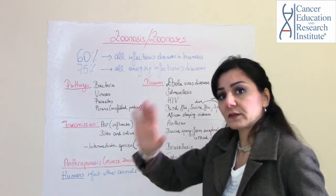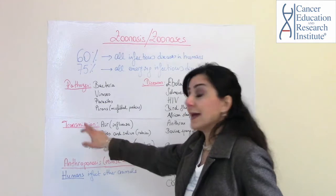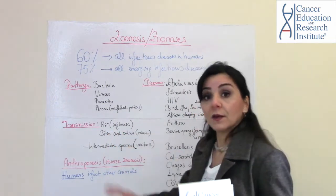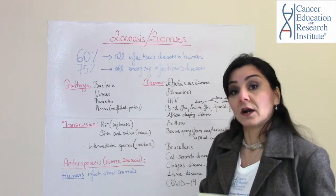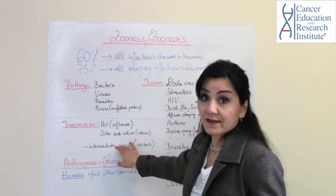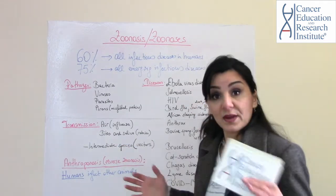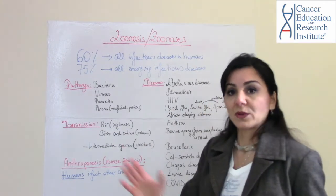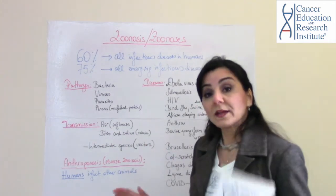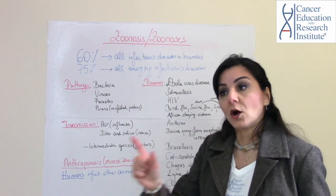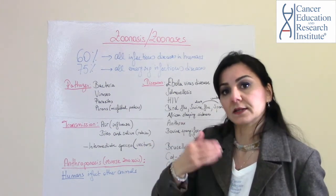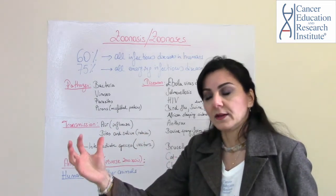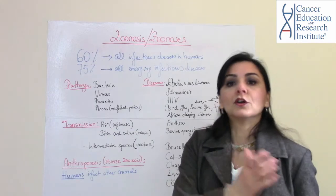Let's talk about transmission. Transmission can occur via air — influenza and all the flus are in this category. Bites and saliva — for example, rabies is transferred through bites and saliva. There can also be intermediate species, which are vectors that transfer the disease. They are not getting sick themselves, but they transfer it from one animal to the human.